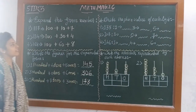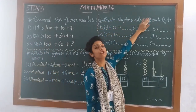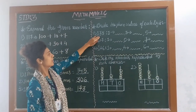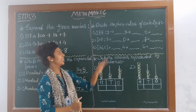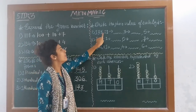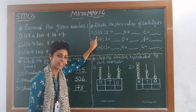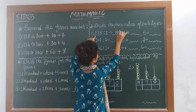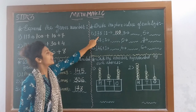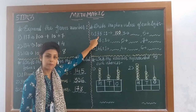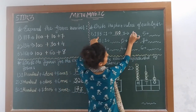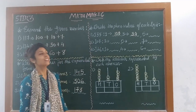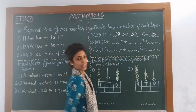Now next: write the place value of each digit. Number 1 is 135. We start from the right side — 1's, 10's and 100's. 1 is at 100's place, so 1 multiplied by 100 is 100. 3 is at 10's place, so 3 multiplied by 10 is 30. And 5 is at 1's place, so 5 ones are 5.